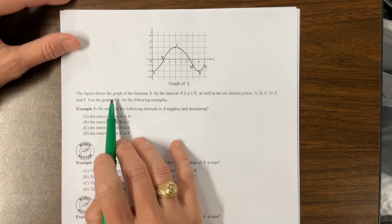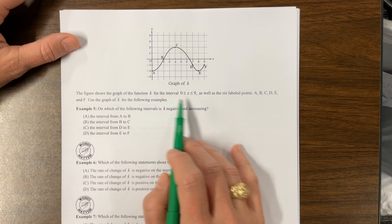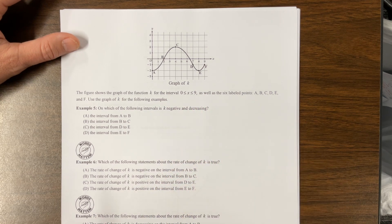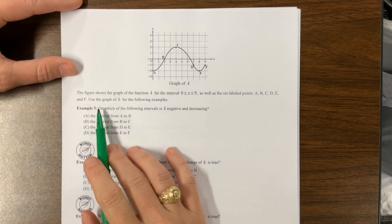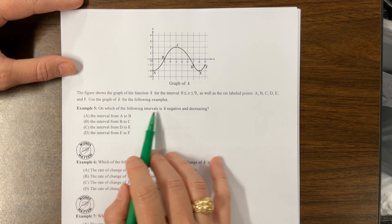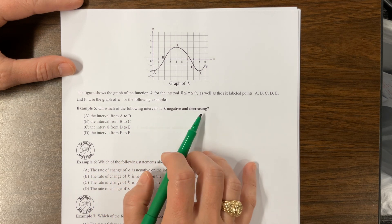Okay, so it says the figure shows a graph of K over the intervals from 0 to 9, as well as the six labeled points A, B, C, D, E, and F.